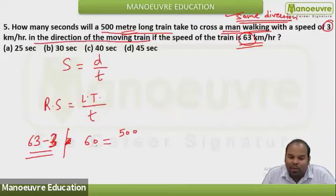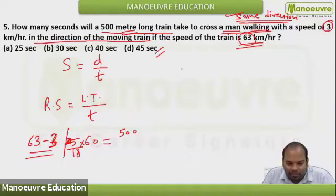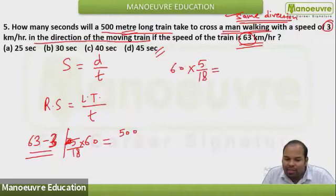So 60 is equal to length of train is 500. What can I do? Convert this, this 60 km per hour. You have to multiply by 5 by 18. Let me write it here. 60 into 5 by 18, km per hour conversion is done. Now this is in meter per seconds.